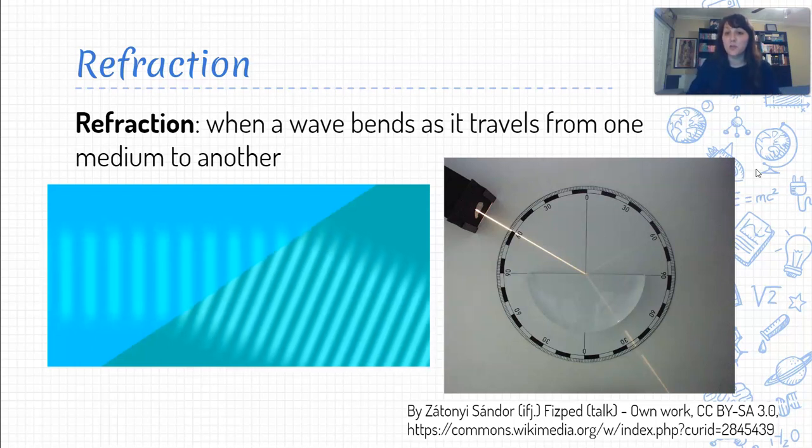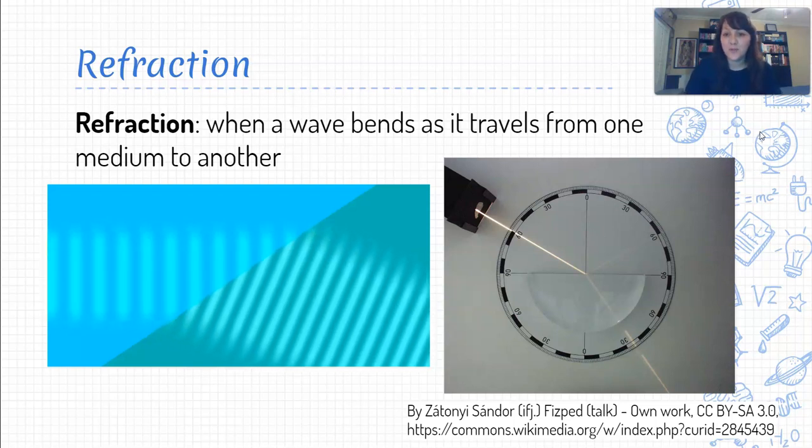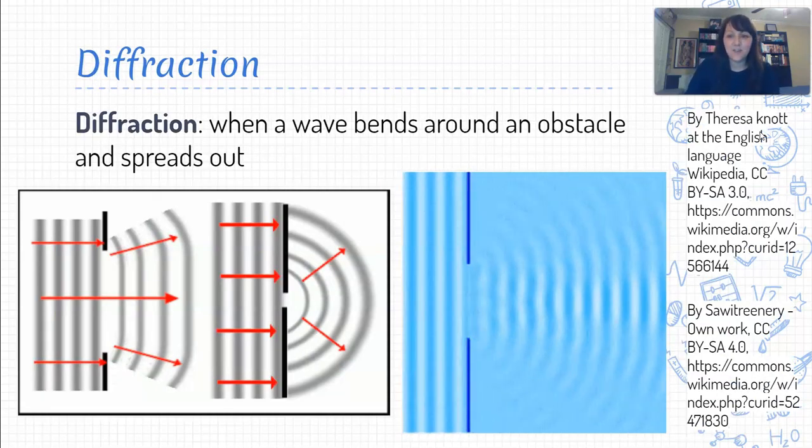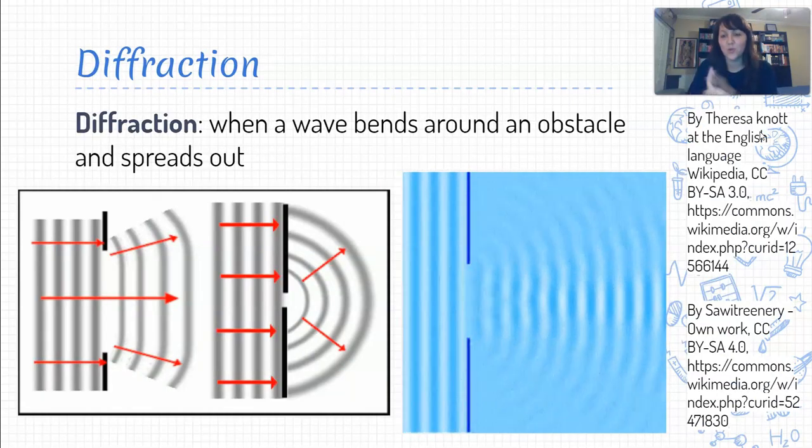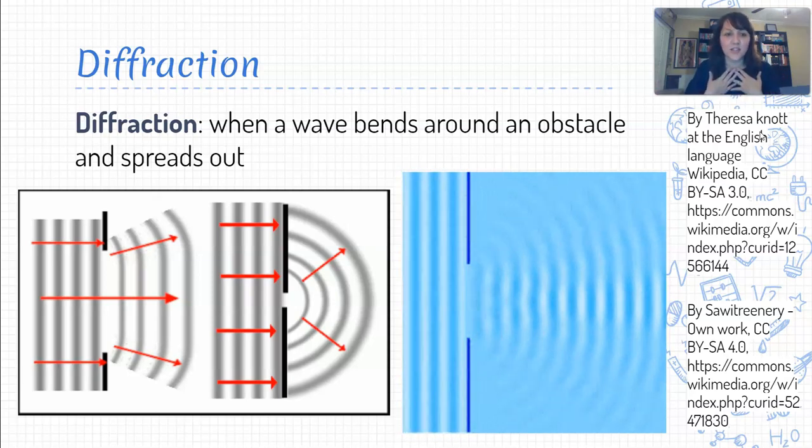So in this picture, we get two for one, we see both refraction and reflection. Cute! All right, so that's refraction. The next wave phenomenon is called diffraction. So there's reflection, refraction, and diffraction. I am sorry, I did not choose these names.